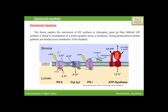This side is the stroma side of the thylakoid membrane, and this side is the lumen side of the thylakoid membrane. Splitting of water takes place on the inner side of the thylakoid membrane, so due to the splitting of two molecules of water, four hydrogen ions are produced that accumulate within the lumen of the thylakoid.